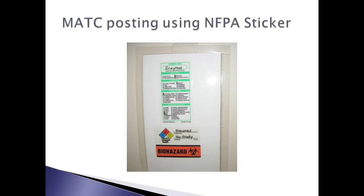In the labs here at MATC we do not use the NFPA specified symbols in the white field. Instead, we use an alternative set of symbols that indicate the kind of protective gear that should be used when handling the material. These alternative symbols are drawn from the HMIG system, which differs somewhat from the NFPA system. We will discuss this system also, but first let's get more specific with the other three diamonds on the NFPA signal.